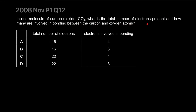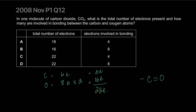In one molecule of carbon dioxide, what is the total number of electrons present and how many are involved in bonding between carbon and oxygen atoms? Carbon has six protons and oxygen has eight protons, meaning six electrons and eight electrons respectively. In CO₂ there are two oxygens, so that's six electrons from carbon and sixteen from oxygen — a total of 22 electrons. Each bond line represents two electrons; you have four bonds, so eight electrons are involved in bonding. The correct answer is D.